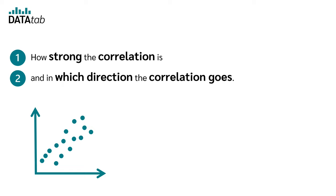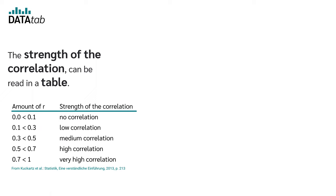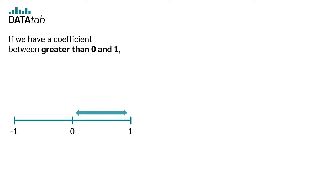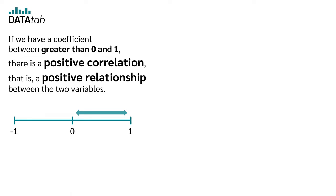The strength of the correlation can be read in a table. If we have a coefficient between minus one and less than zero, there is a negative correlation. If we have a coefficient between greater than zero and one, there is a positive correlation, that is, a positive relationship between the two variables. If the result is zero, we have no correlation.